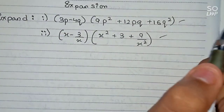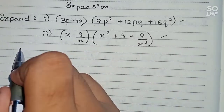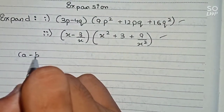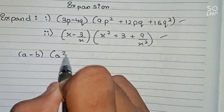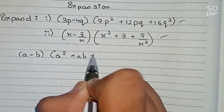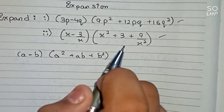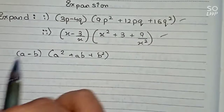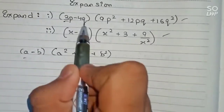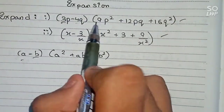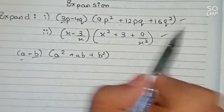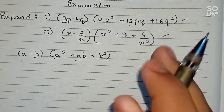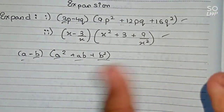For both question number one and question number two, we will use a single identity. Our identity will be: (a minus b) multiplied by (a squared plus ab plus b squared). In both questions we can see that for question number one, 3p will be a, 4q will be b, 9p squared will be a squared, 12pq will be ab, and 16q squared will be b squared. That means both questions are in this format.